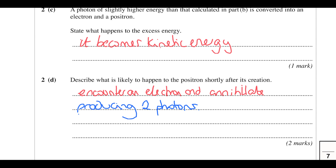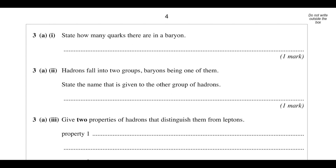Looking at some quark configurations: how many quarks are there in a baryon? There are three. Hadrons fall into two groups, baryons being one of them — state the name given to the other group. That is mesons, which are a quark and an antiquark.